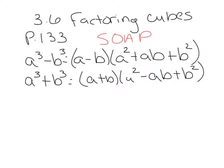SOAP stands for: the first sign is the Same as what you're factoring — so if you're factoring a difference, the first sign is minus; if you're factoring a sum, the first sign is plus. The second sign is Opposite — if you started with minus, the next sign is positive; if you started with plus, it flips. The third sign is Always Positive in both formulas. So: Same, Opposite, Always Positive. The terms are a, b, a squared, ab, b squared. Memorize the terms and use SOAP for the signs.